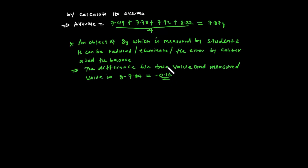To summarize: we covered SI prefixes and what each prefix means. We also defined uncertainty and its two categories — systematic uncertainty, which is consistent and causes values to be always too large or too small, and random uncertainty, which causes unpredictable variation up and down.